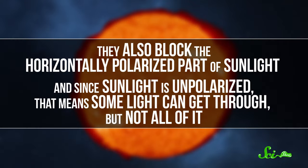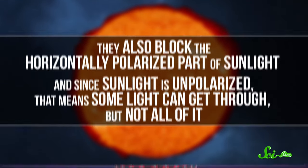Polarized lenses also block the horizontally polarized part of sunlight. And since sunlight is unpolarized, that means that some light can get through, but not all of it. If you turn those lenses on their side, suddenly the horizontally polarized light isn't in the same direction as those molecules anymore, and you can watch the glare come back. And in the last video, we got that backward as well.